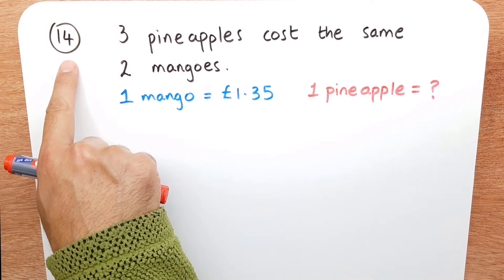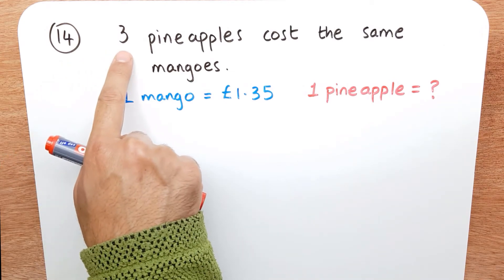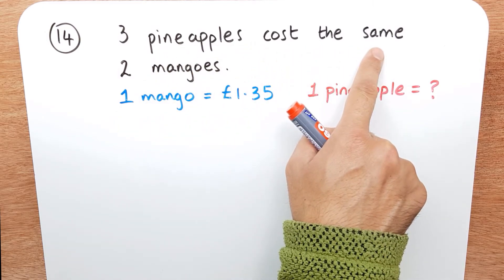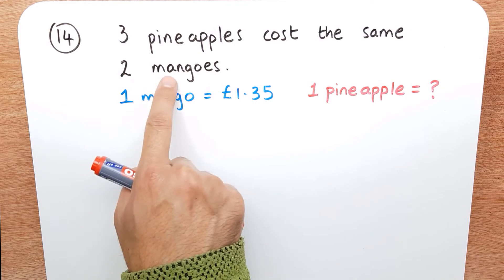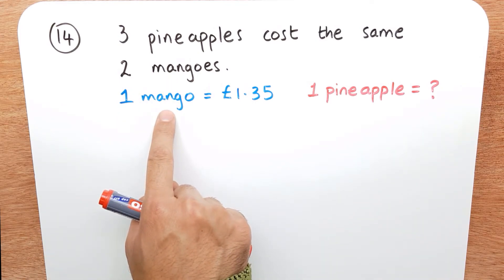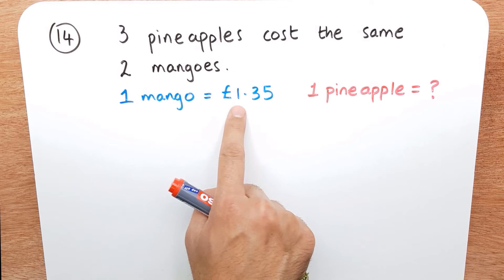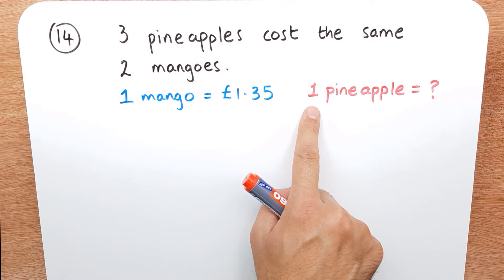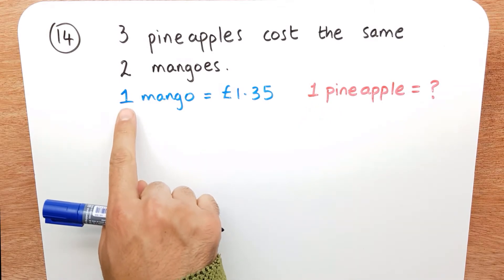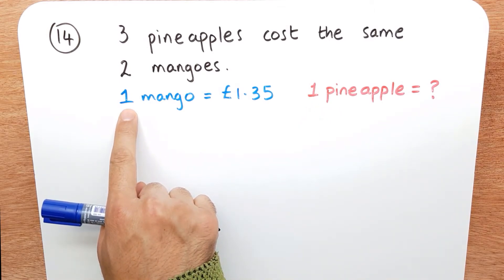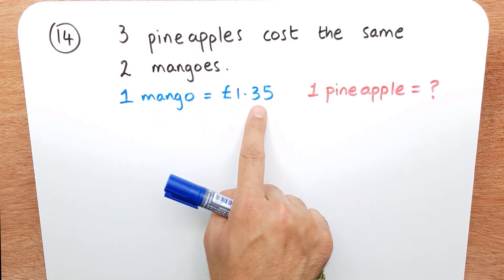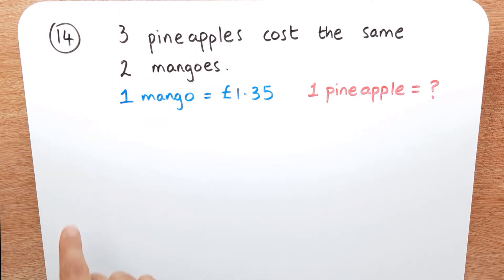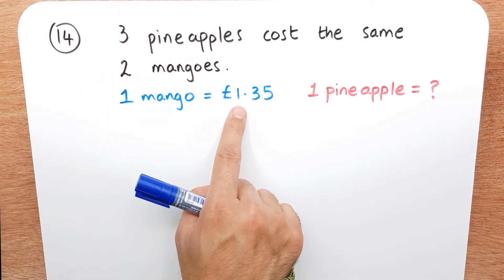In question 14 we're told that three pineapples cost the same as two mangoes, and that one mango costs one pound 35 pence. We need to work out the cost of one pineapple. We know one mango costs £1.35, so two mangoes will cost two times £1.35.